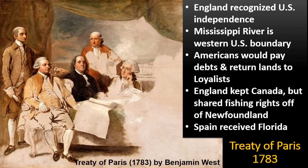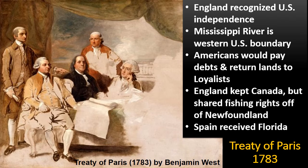The Treaty of Paris is the treaty that officially ends the American Revolution. Its terms: England would officially recognize American independence; the Mississippi River would become the western boundary of the United States; Americans would promise to pay back their debts and return lands to any loyalists whose lands were seized; England would keep their rights to Canada but would share fishing rights off Newfoundland and the Atlantic; and Spain would receive Florida back from Britain.